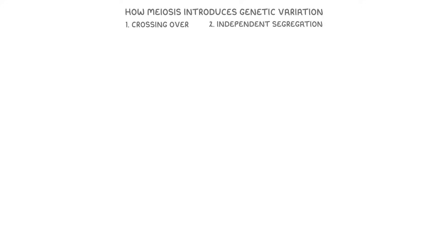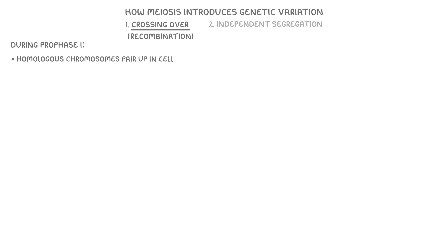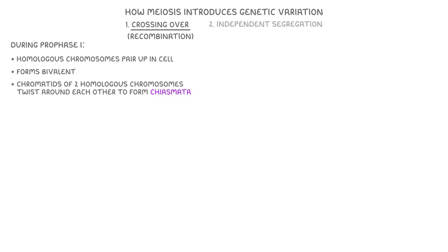Next, let's cover how meiosis introduces genetic variation into the gametes via two different processes: crossing over and independent segregation. Crossing over, which is sometimes called recombination, happens during prophase one. During this stage of meiosis, homologous chromosomes pair up in the cell. This forms a structure called a bivalent, and the chromatids of the two homologous chromosomes twist around each other to form a chiasmata.